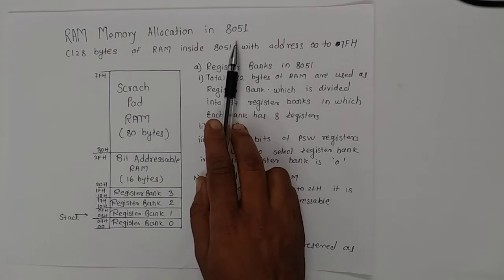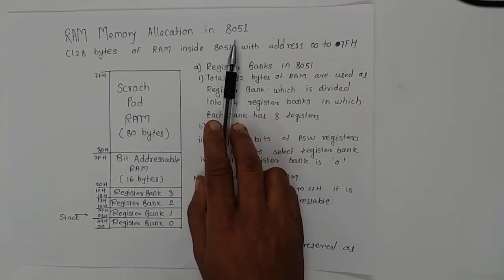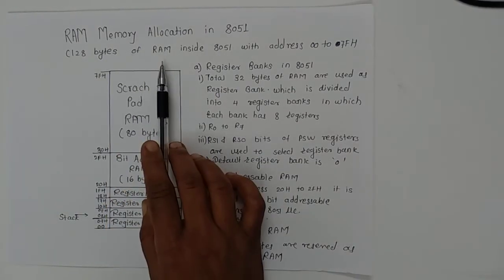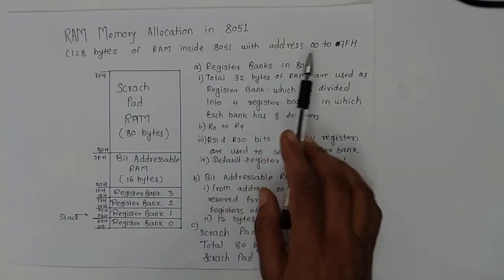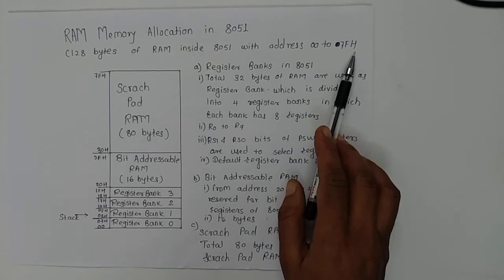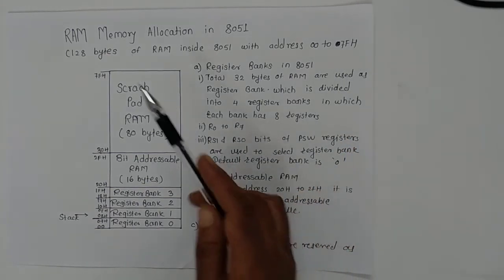We know that in 8051 microcontroller we have 128 bytes of RAM with address 00H to 7FH. This RAM is divided into three parts.